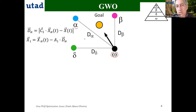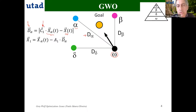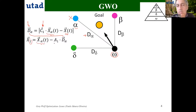The distance to the alpha wolf is represented by D_alpha, evaluated as the absolute value of the difference between the position of the alpha wolf and the position of the omega wolf. There is a constant C1, which is a random-based constant that perturbs the position from the alpha wolf. This distance is used in the equation for X1, the contribution of the alpha wolf, which equals the alpha position minus this distance multiplied by another constant A1, also based on a random value. So we have two random-based constants, C1 and A1.